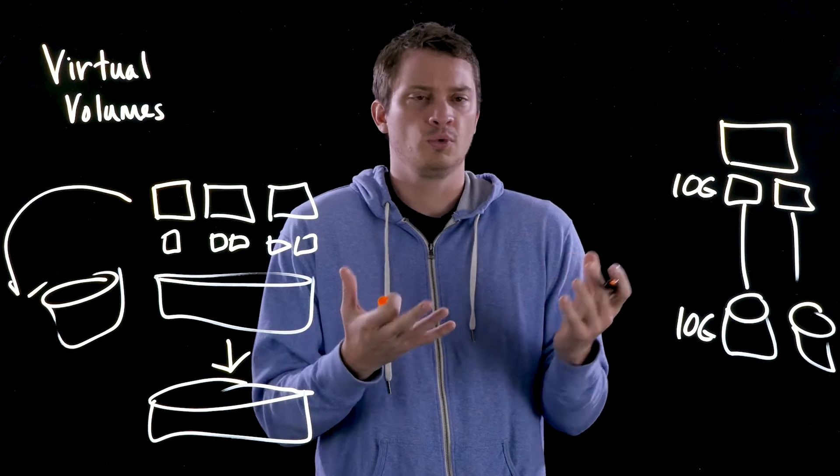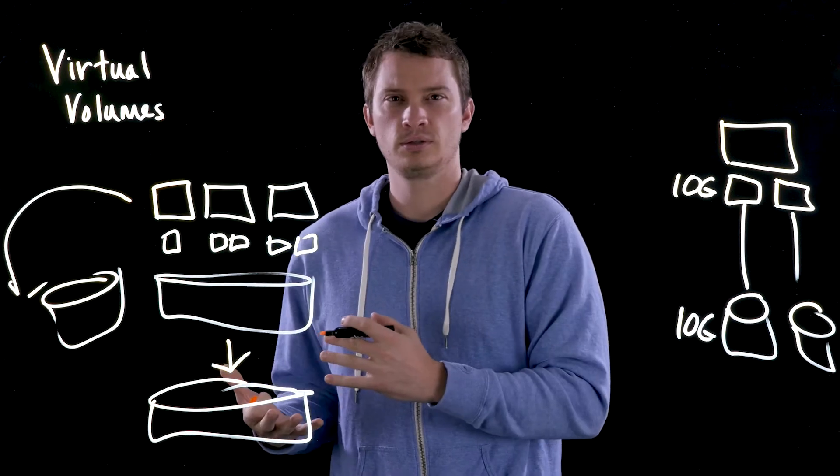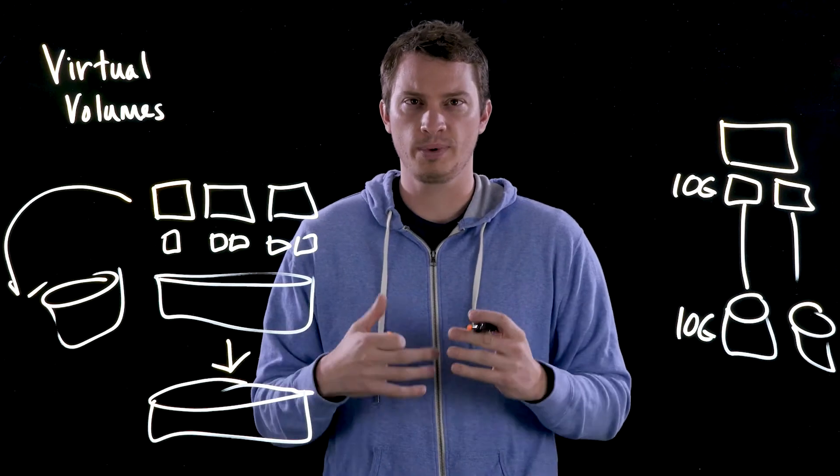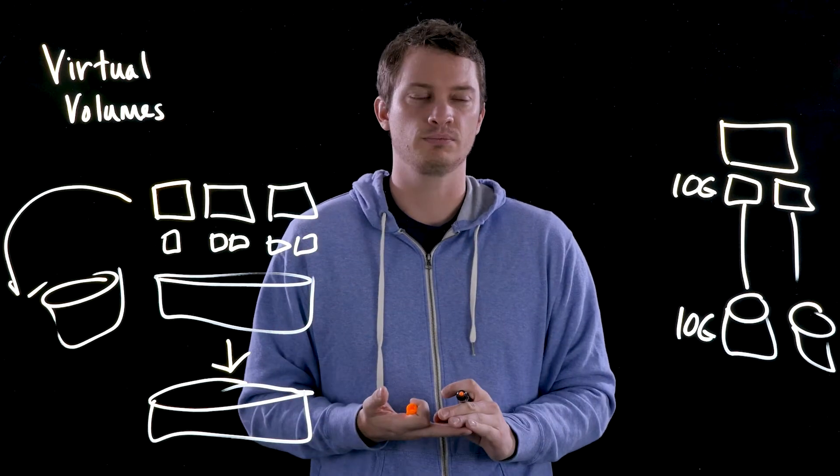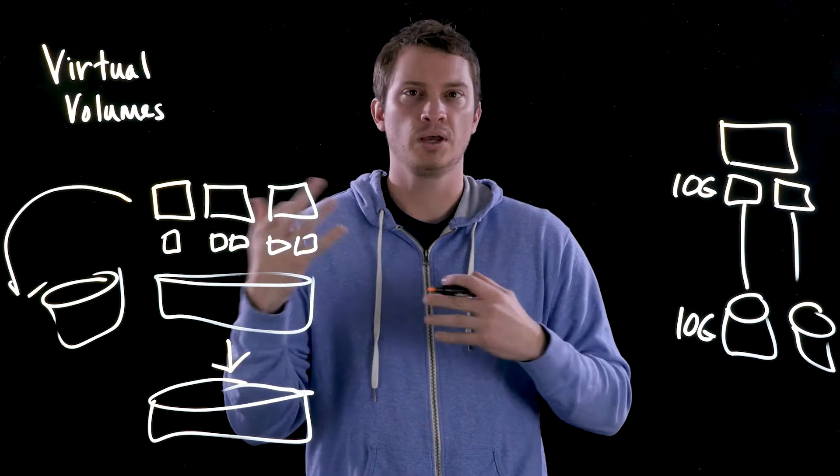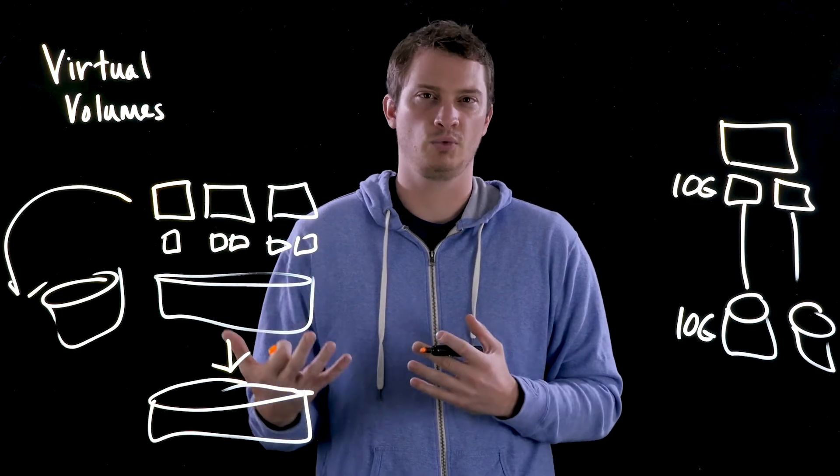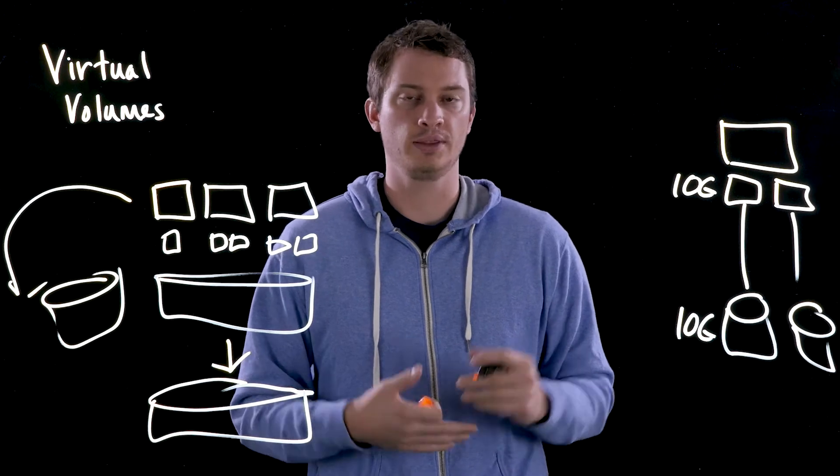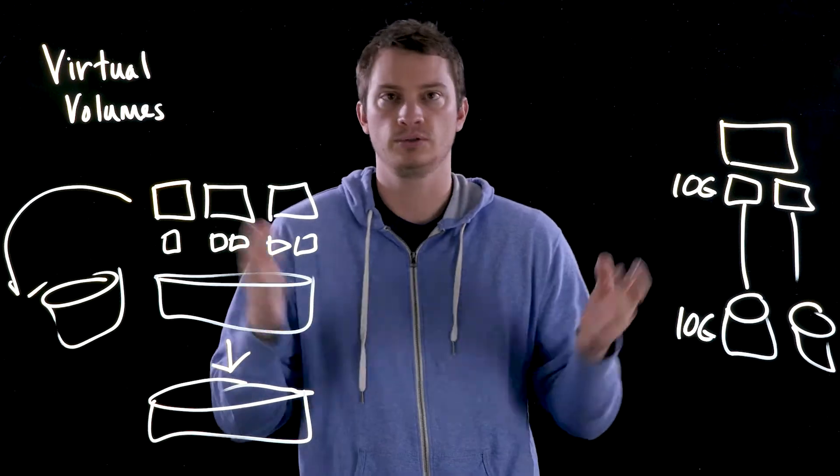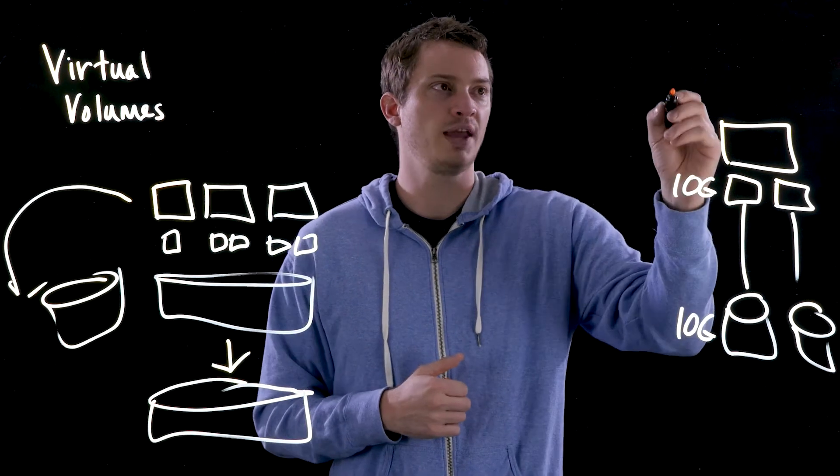So furthermore, there's the policy side of this. Okay, now I have the granularity, that's all wonderful, but what about compliancy, making sure that policy is right? Well, first off, because the communication layer between VMware and the array, VMware knows what the array is capable of. Hey, this array can replicate, it can snapshot, it can do whatever.